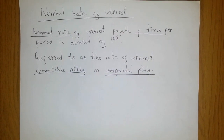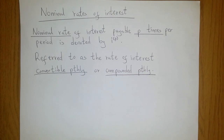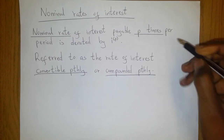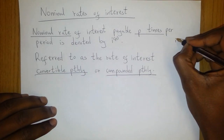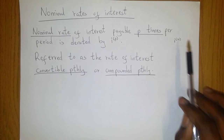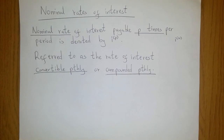The nominal rate of interest payable p times per period is denoted by I^(p). So if we say we have a nominal rate of interest of 24% payable 10 times in the period we are looking at, we will have I^(10), to denote that the interest is payable 10 times per unit period. We refer to this rate of interest as convertible p-thly or compounded p-thly.